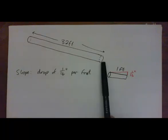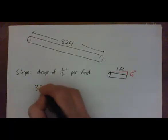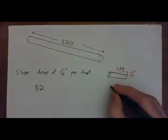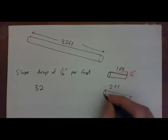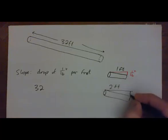Now we have 32 feet. So that means if you have 2 feet, 2 feet of pipe, it's going to drop down 2/16ths or 1/8th of an inch.